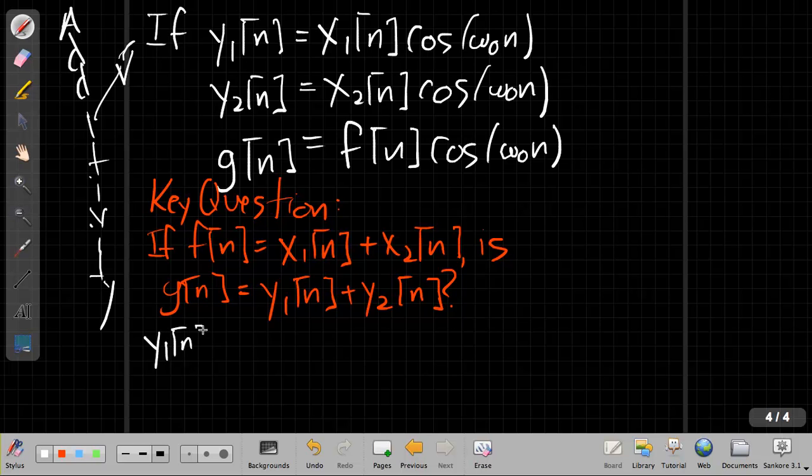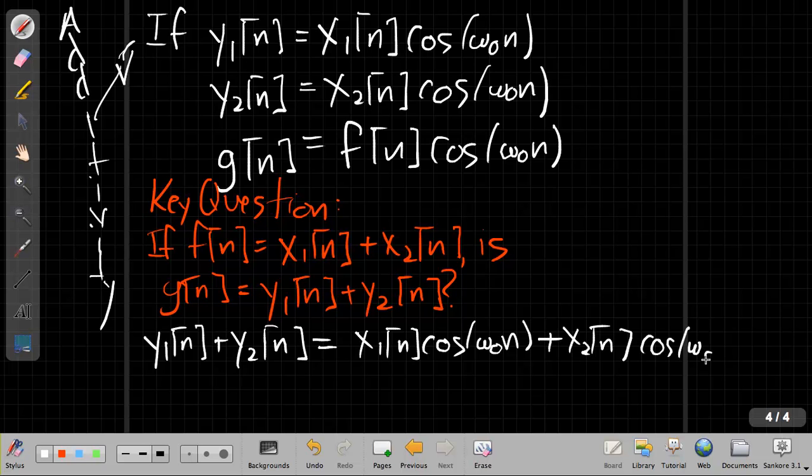So let's start with y1 of n plus y2 of n. We can just get that from up above. It's going to be x1 of n cos omega not n plus x2 of n cos omega not n. So y1 we just grabbed from up here. I guess I can use a little laser pointer. To get y1 of n, I took this equation here. To get y2 of n, I took this equation here. I bring them both down and plug them in. And I get this expression for y1 plus y2.